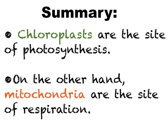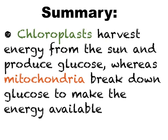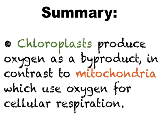Here is a summary of the differences between chloroplasts and mitochondria. Chloroplasts are the site of photosynthesis; on the other hand, mitochondria are the site of respiration. Chloroplasts harvest energy from the sun and produce glucose, whereas mitochondria break down glucose to make the energy available to cells. Chloroplasts produce oxygen as a byproduct, in contrast to mitochondria which use oxygen for cellular respiration.